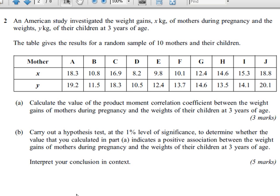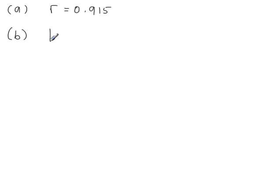Part B, we're going to carry out a Hypothesis Test at the 1% level to determine whether the value that we calculated in Part A indicates a positive association between the weight gains of mothers during pregnancy and the weights of their children at 3 years of age. So the H₀ and H₁ statements will be as follows. H₀, the Population Product Moment Correlation Coefficient is equal to 0. H₁, the Population Product Moment Correlation Coefficient is greater than 0. This states we are looking for a positive association or a positive correlation.